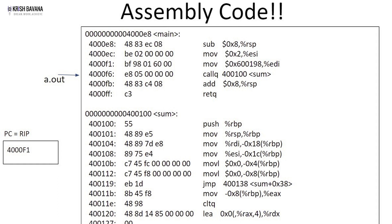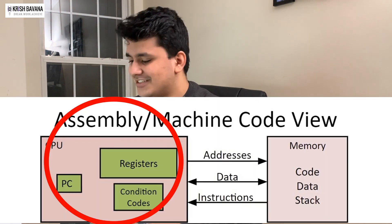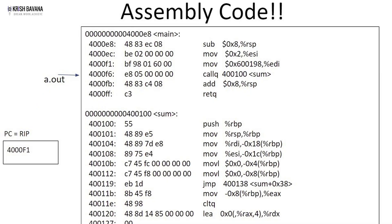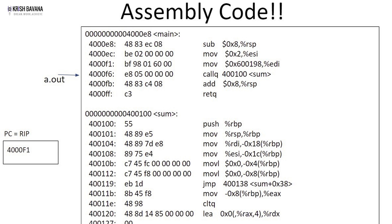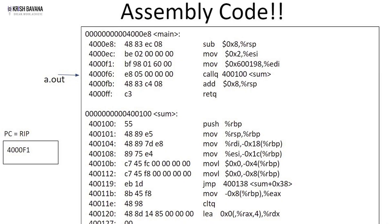For every single line it goes sequentially. The first line shows 400E8 as the address where it is stored, followed by the hex values 4883 EC08, and then the assembly chunk — we'll talk about that in later videos. The program runs sequentially and we track position using the RIP register — the Register Instruction Pointer. RIP holds whatever address we're currently at. For example if we're at 400F6, RIP holds that address, which is how we know where the code is and how it is running.